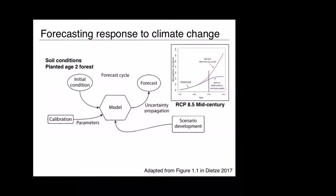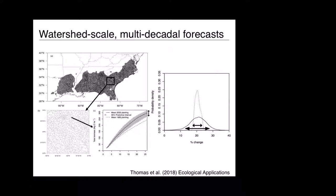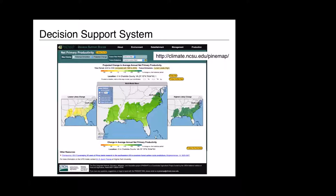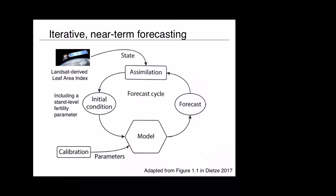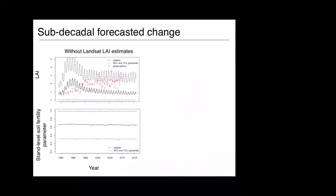We do a mid-century type forecast, where initial conditions are the current forest and you ask what it looks like by mid-century, propagating all the uncertainty. We can do that for each watershed across the southeastern US to get a distribution of percent change in productivity for a pine stand in that region. This feeds into a decision support system developed at NC State as part of the PIMAC project, where they work with stakeholders in the forest industry on information they're most interested in. We can also move to more near-term forecasting by simulating Landsat LAI to update the state each year, so we no longer have to assume a particular planting date.